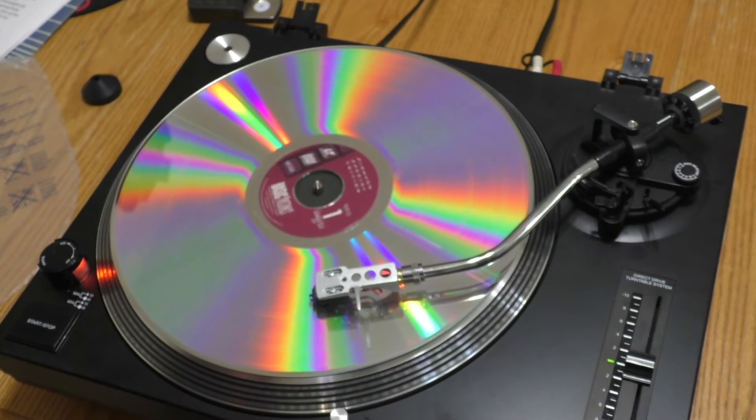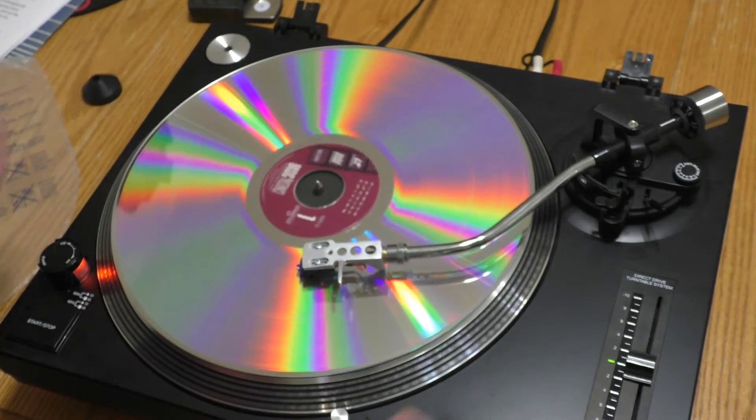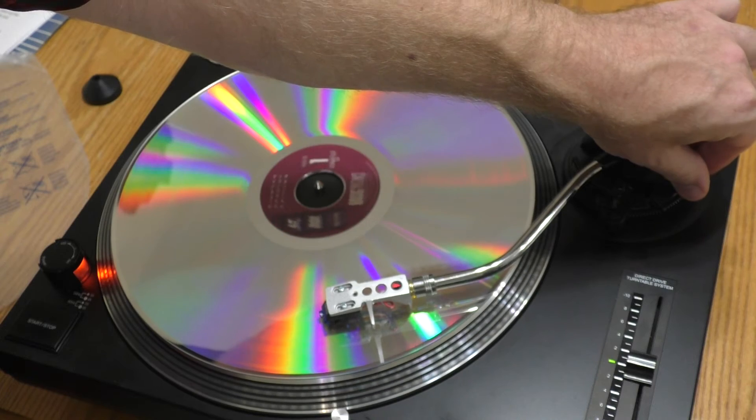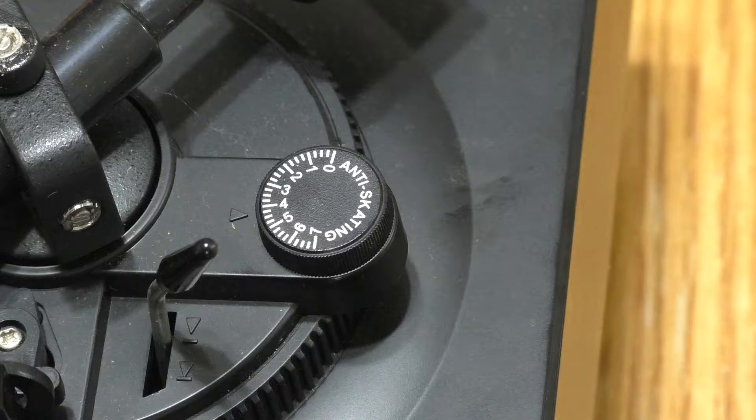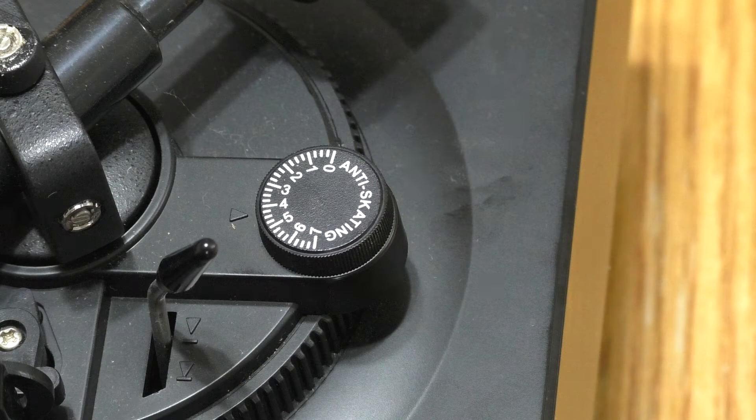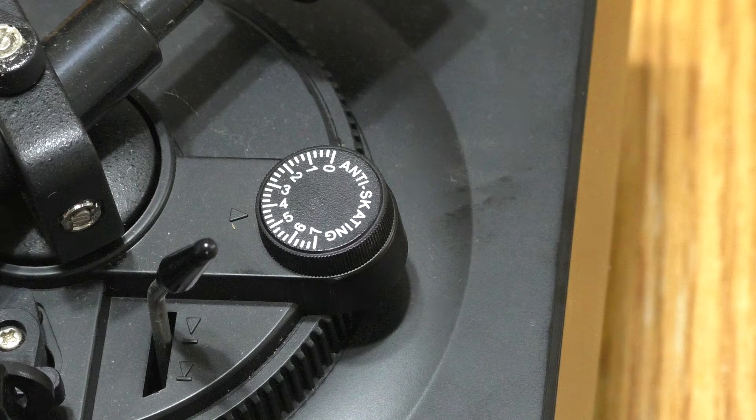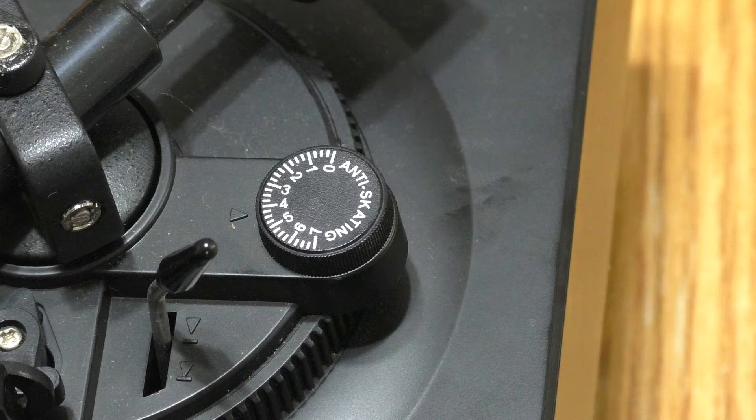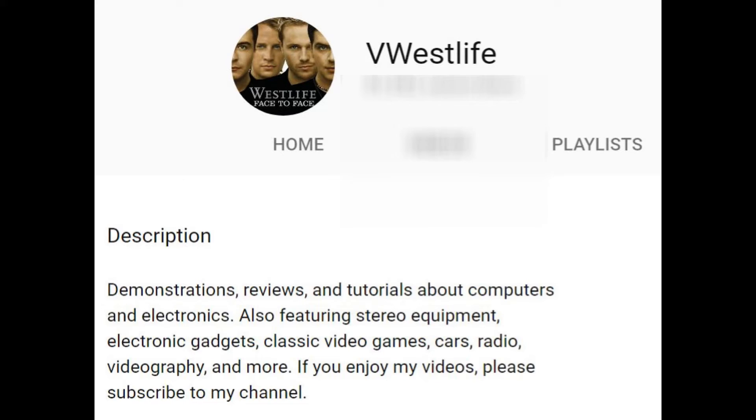I then place the needle near the middle of the laser disc and adjust the anti-skate setting until the tonearm stays in position when the laser disc is spinning. In order to get the skate adjustment balanced, I had to set the anti-skating knob at 3.75 with a 1.25 tracking force. I learned this method from YouTuber V. Westlife, a link to his channel is in the description.